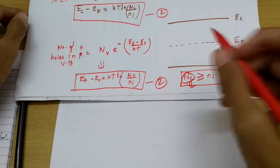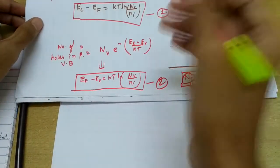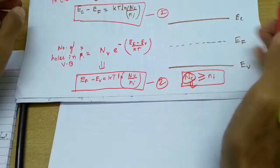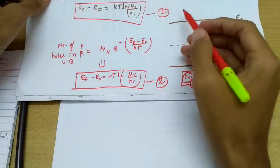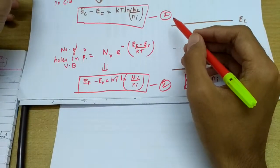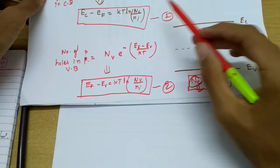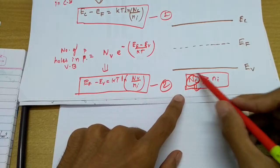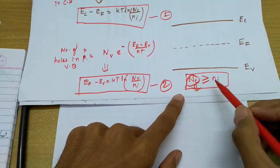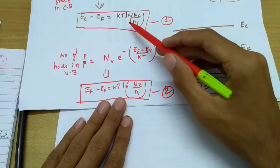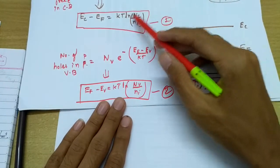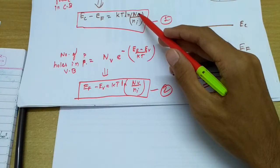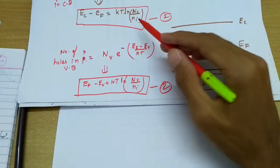In the last lecture we derived two important relations. Using these, we will derive some more important relations helpful in numerical problems. Remember that nc is always greater than or equal to ni — this way you will never make a mistake about which term goes above in the expression.